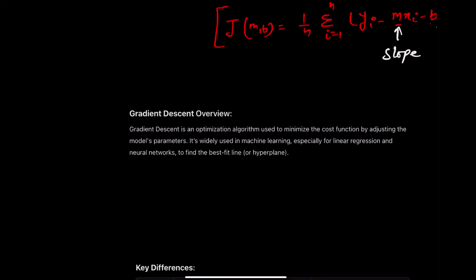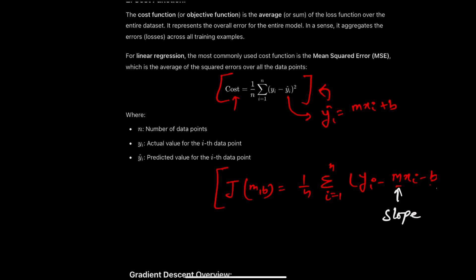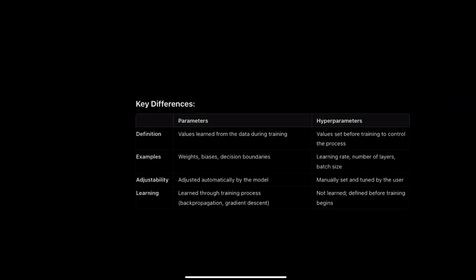Gradient descent is an optimization algorithm used to minimize the cost function by adjusting the model's parameters. It is widely used in machine learning — especially for linear regression and neural networks — to find the best fit line or hyperplane. The parameters m and b can be tweaked to get the minimum value of the cost function J.